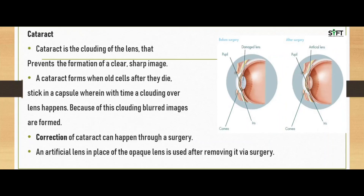Another defect of the eye is cataract. Cataract is the clouding of the lens that prevents the formation of a clear, sharp image. In the given image, you can see a cloudy appearance on the lens. A cataract forms when old cells, after they die, stick in a capsule, and over time a clouding over the lens occurs, resulting in blurred images. Correction of cataract can happen through surgery, where an artificial lens is placed in place of the opaque lens.